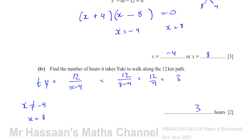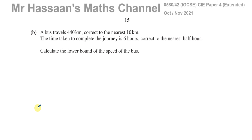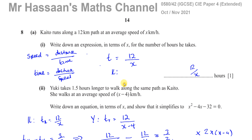Part b is a separate question about a bus travelling 440 kilometers correct to the nearest 10 kilometers — it's about limits of accuracy, upper and lower bounds, which is a different topic. So I'll cover that in a separate video categorized under limits of accuracy. This question falls under algebra and constructing equations. Check the playlist for other questions from this paper, and subscribe to the channel — thank you for watching!